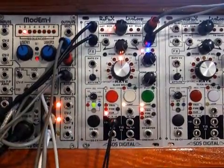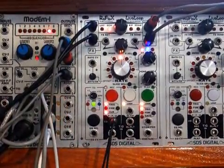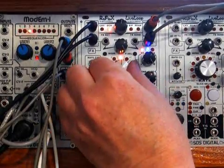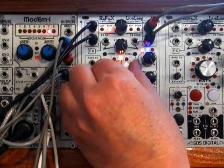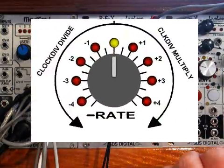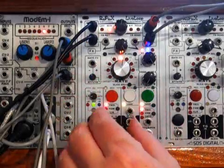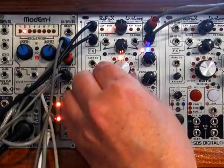There's clock input now. When you're in clock and the rate is locked, this will act like a control to divide and multiply. I'll show you while it's running here.